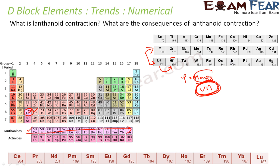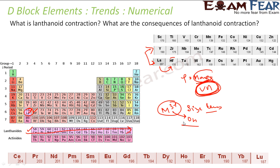One more consequence is a decrease in the basic strength of the hydroxides of lanthanides with increasing atomic number. Because the ionic size decreases across the lanthanide series, the cation size becomes smaller. By Fajan's rule, smaller cation size leads to decreased ionic character and increased covalent character between the metal and OH, making the hydroxide less basic.